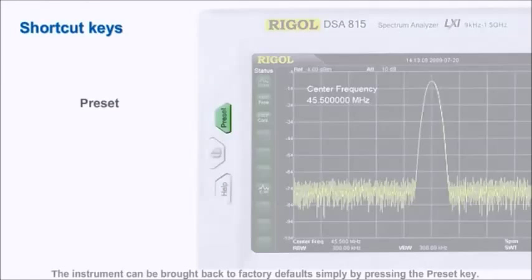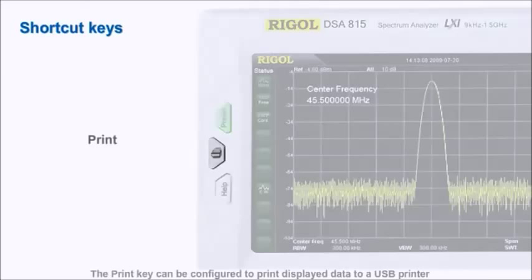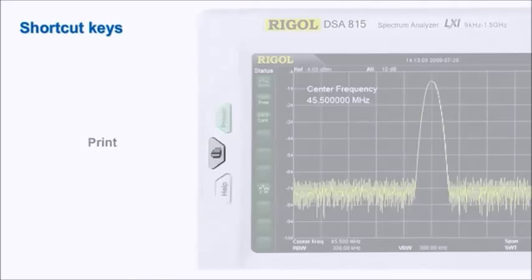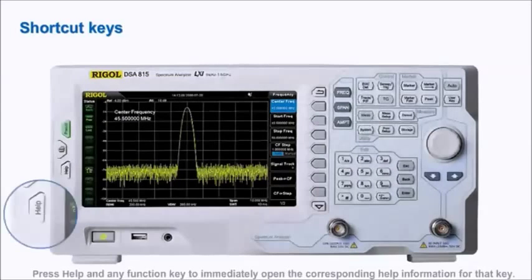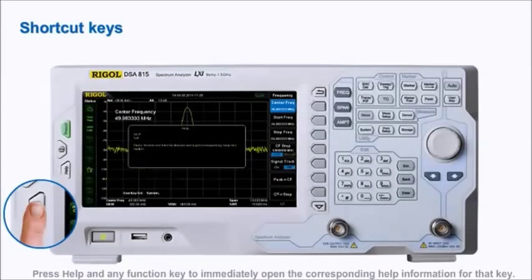The instrument can be brought back to factory defaults simply by pressing the preset key. The print key can be configured to print displayed data to a USB printer or to store a screenshot to a USB storage device. Press help and any function key to immediately open the corresponding help information for that key.